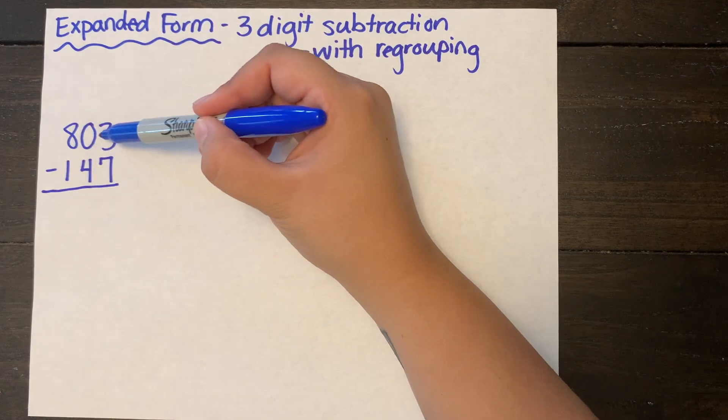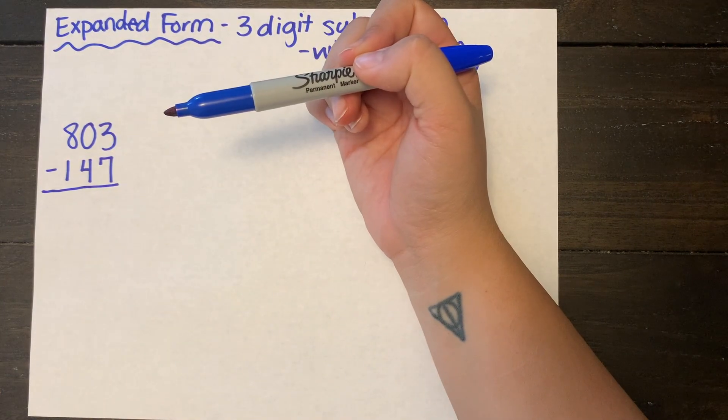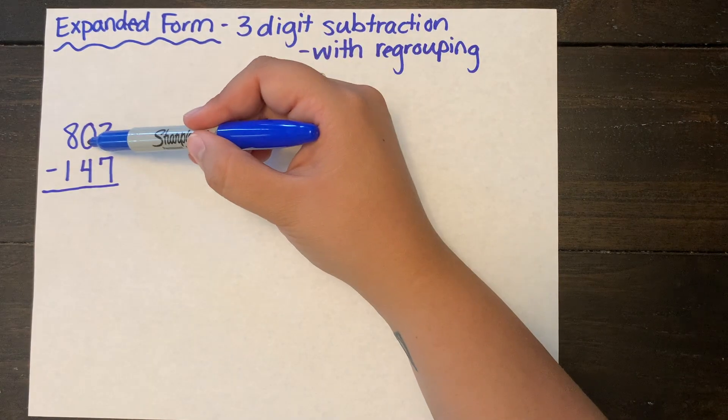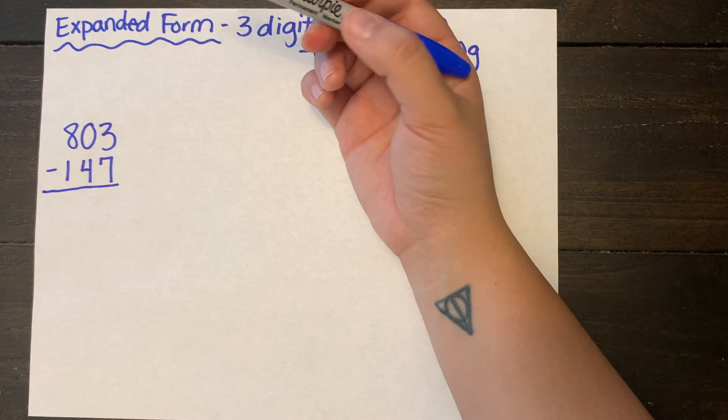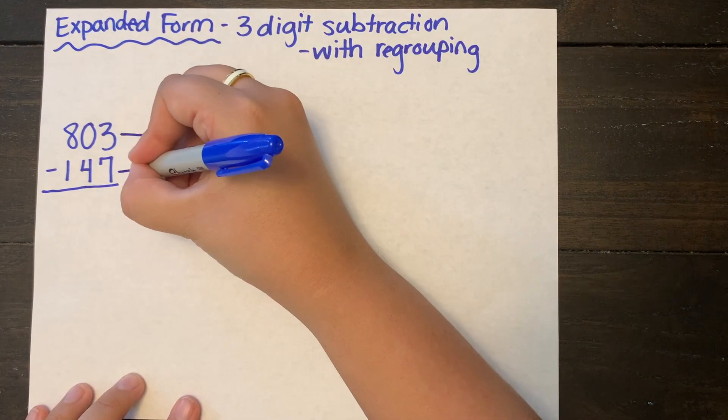So today we're going to start off with 803 minus 147 and this is a tricky problem because it does have a zero in the tens place. So we're going to walk through that and see how we can work around having that obstacle.